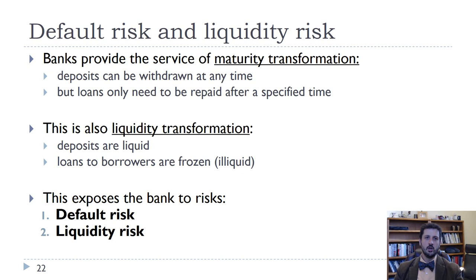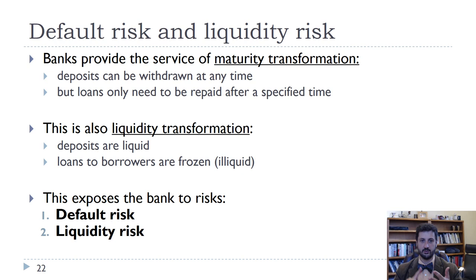When a bank is making a loan, it has to balance a number of risks. One of the things that is very valuable that a bank does is called maturity transformation. Basically, that means it takes money that is short-term — that people can demand back at any time, money in checking accounts, savings accounts, money market accounts — and then makes long-term loans. It takes these short-term deposits and creates long-term loans.